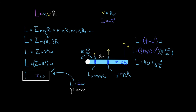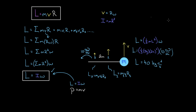To recap: if you have a point mass where all the mass rotates at the same radius and you want the angular momentum, the easiest formula is mvr. However, if you have a mass distributed throughout an object so that different points are at different radii, the easiest way to get angular momentum is with the formula L = Iω, where I is the moment of inertia and omega is the angular velocity of the object.